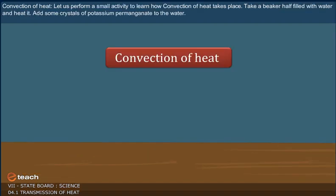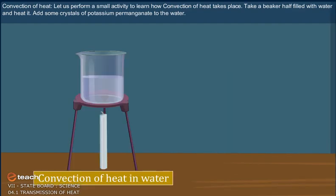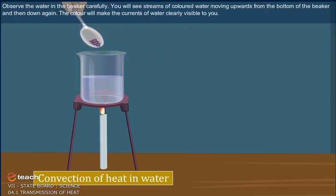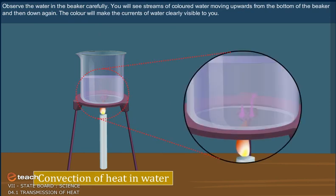Convection of heat. Let us perform a small activity to learn how convection of heat takes place. Take a beaker half filled with water and heat it. Add some crystals of potassium permanganate to the water. Observe the water in the beaker carefully. You will see streams of colored water moving upwards from the bottom of the beaker and then down again. The color will make the currents of water clearly visible to you.